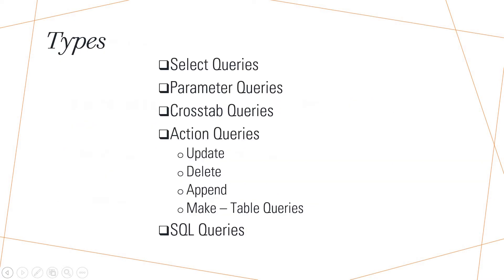The types of queries are: first, select queries; second, parameter queries; third, crosstab queries; and fourth, action queries. Under action queries there are four subtypes: update query, delete query, append query, and make table query. The last type is SQL queries — SQL stands for structured query language.